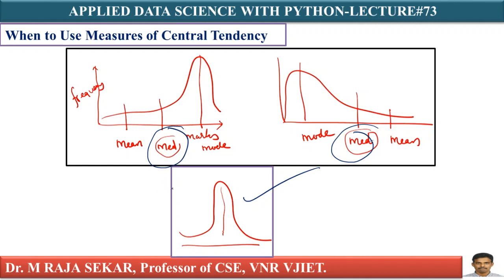It is a simple technique. The clue for choosing the correct central tendency is: first, you have to plot that data and fit the curve. After plotting the data, you have to get an idea of skewness — whether it is left-skewed, right-skewed, or symmetric. Once you understand the distribution and skewness of the data, choosing a measure of central tendency is straightforward. If it is skewed data, we can choose median as the central tendency.